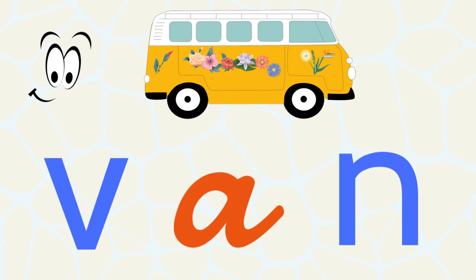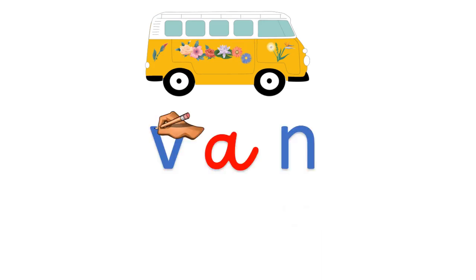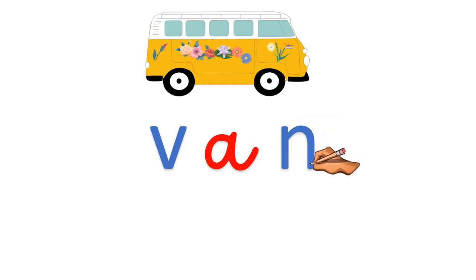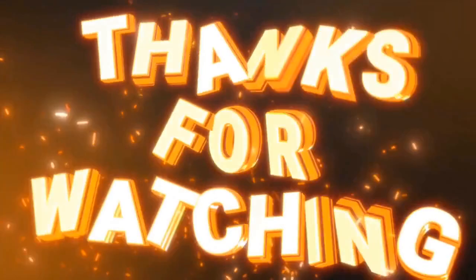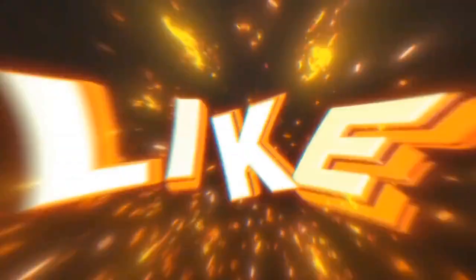When we read the word van, it has three sounds: v-a-n. When we write the word van, it has three letters: v-a-n. Thanks for watching — don't forget to like and subscribe.